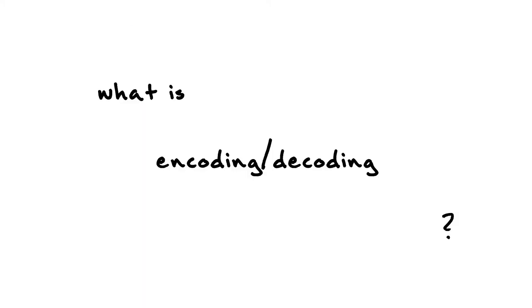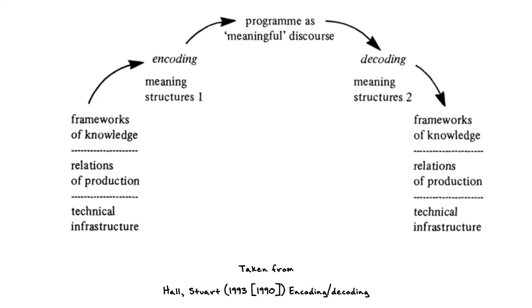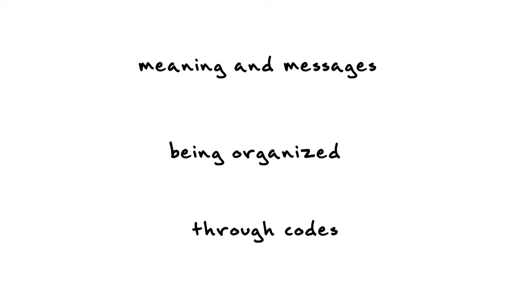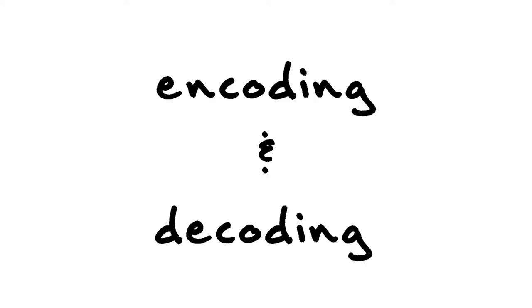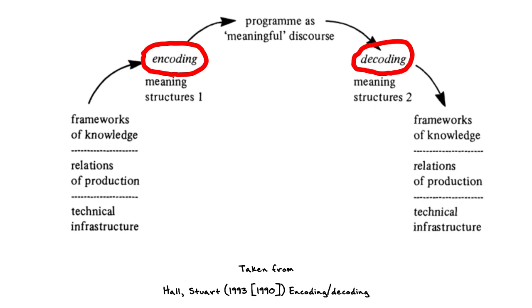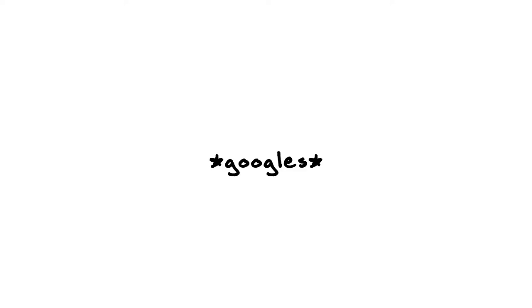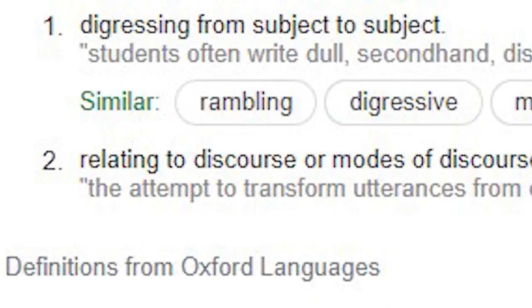So what exactly is this model of communication and how does it work? According to Hall, the process of communication is the process of meaning and messages being organized through codes. In this process of organizing messages through codes, there are two determinant moments — moments where the underlying meaning is determined. Those two moments are encoding and decoding. At these moments, the meaning embedded in a message is in discursive form — in other words, it's being constructed within a discourse.